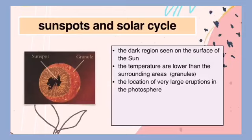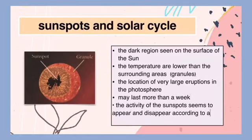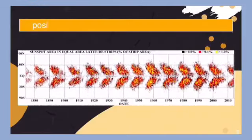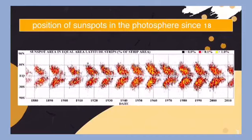Sunspots are the locations of very large eruptions in the photosphere. This phenomenon may last more than a week. The activity of the sunspots appears and disappears according to a cycle that lasts 11 years, known as the solar cycle. The position of sunspots in the photosphere since 1875.